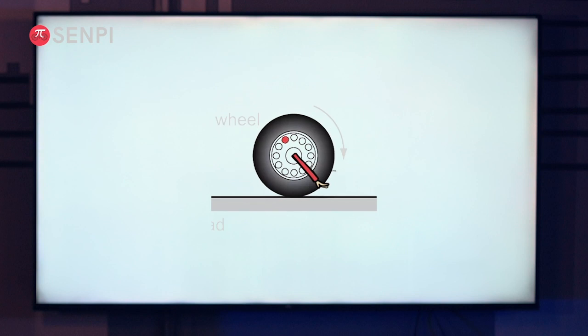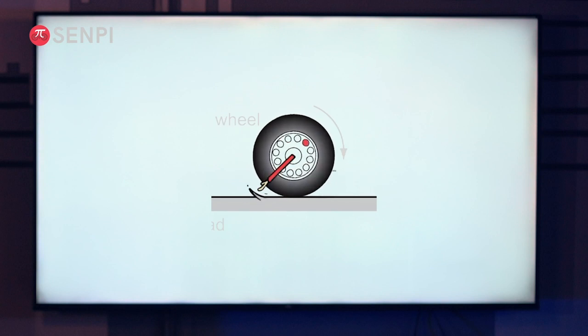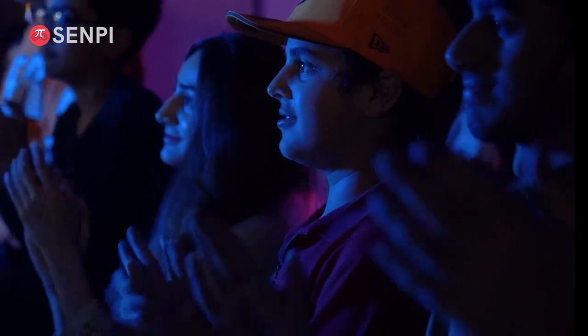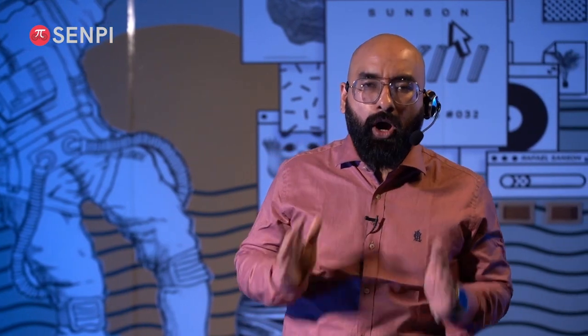So when the tire rotates, it pushes the road back — ke chal gandhi road, piche ho — meaning this force is to the left. So if the tire applied the force on the road towards the left, then the road applied the force on the tire to the right. That's it. You just solved one of the hardest O-level past paper questions.